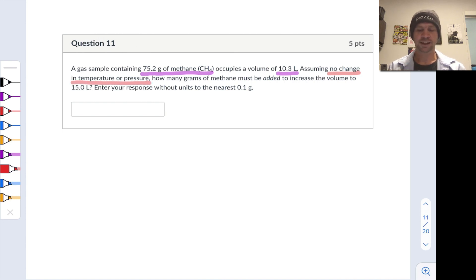How many grams of methane must be added to increase the volume to 15 liters? So we're trying to get to a final volume of 15 liters maintaining the pressure and temperature at their current values by adding methane.